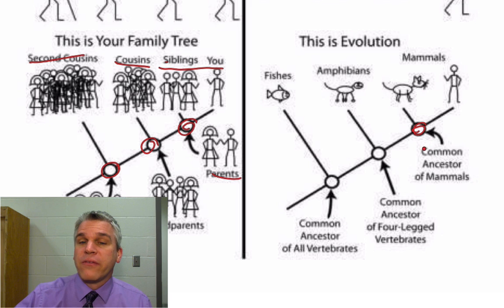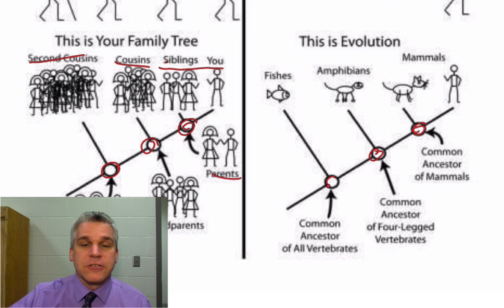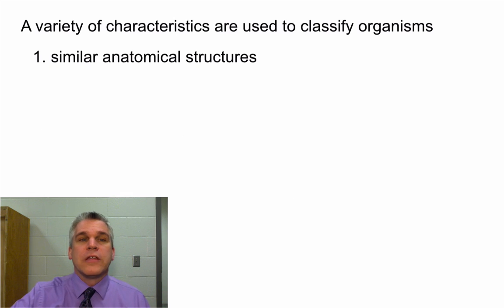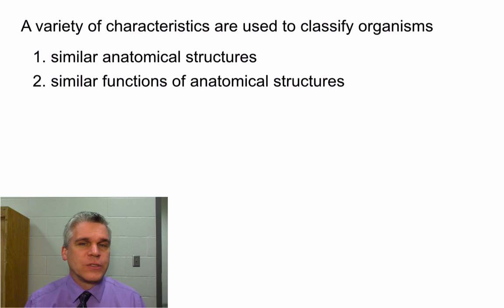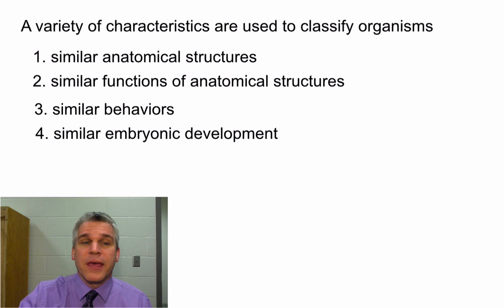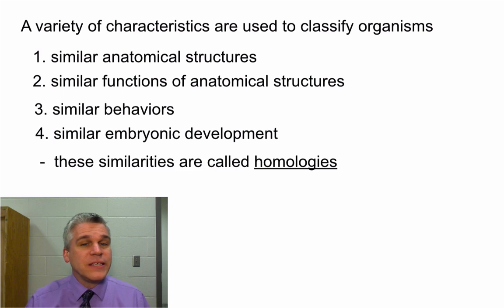There was a common ancestor for all of the mammals today, a common ancestor for all vertebrate animals that have four legs, and a common ancestor for all animals that have a backbone. We don't only use DNA or only structural homologies — there's a variety of things we can use to classify organisms and make cladograms: similar anatomical structures, the functions of those structures, behaviors, and embryonic development. All of these are called homologies. We're going to be practicing making cladograms in class, learning how to read them, and eventually looking at some real DNA to help classify species. I'll see you in class.